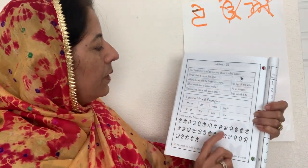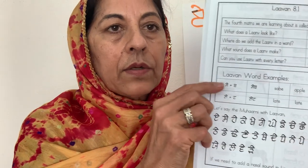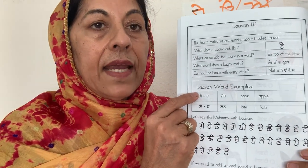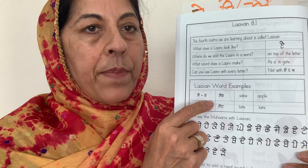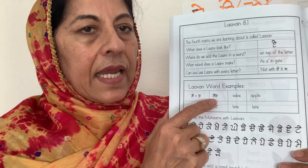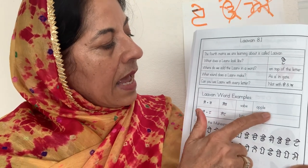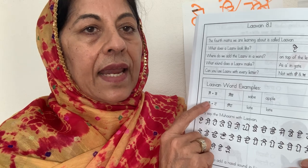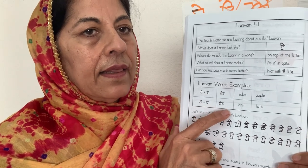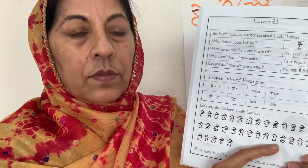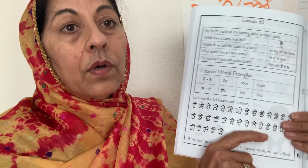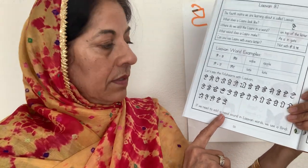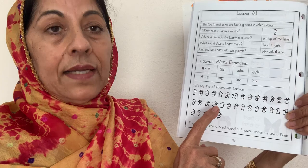Here are some word examples. Let's look at the word: S-A, SE, B — SEB. SEB is an apple. L-A, LATE, T — LATE. LATE means you are late, or in Punjabi we say LATE JA, meaning lie down, right? BEDDE LATE JA.